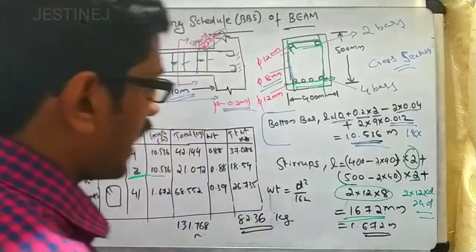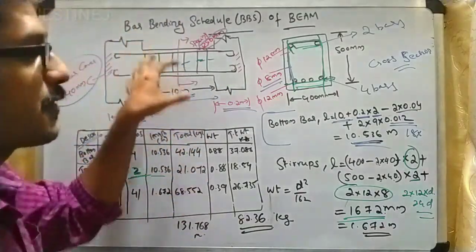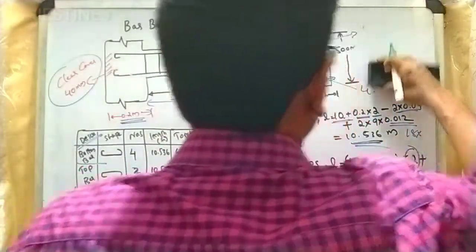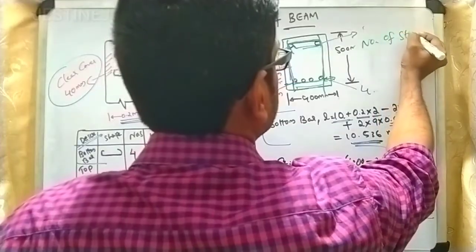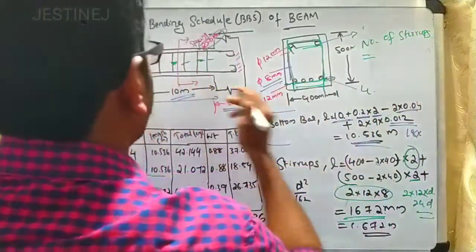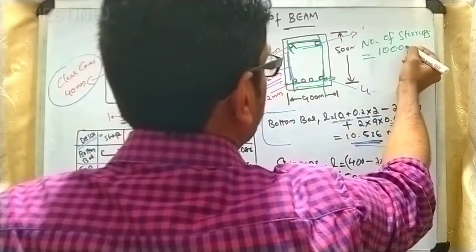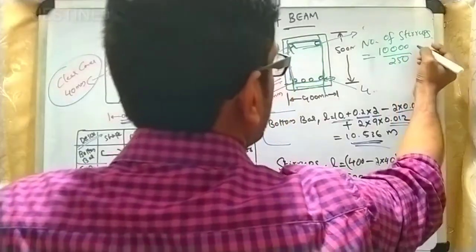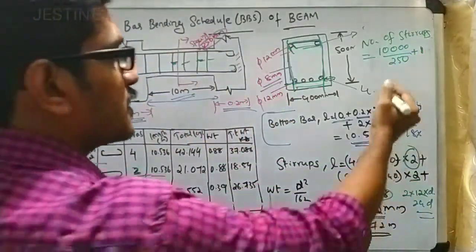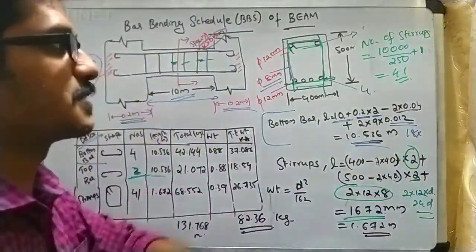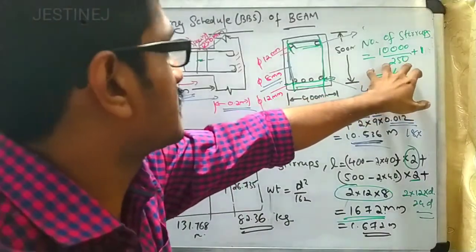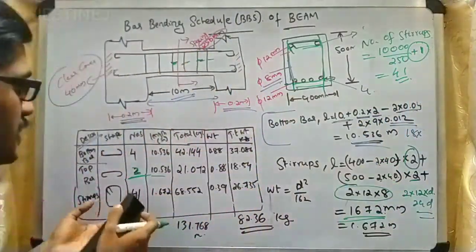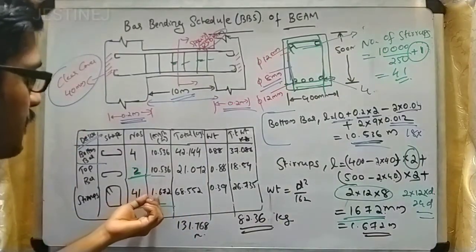The next step is to calculate the number of stirrups. The formula is: number of stirrups = total span length divided by spacing, plus 1. Using 10,000 mm divided by 250 mm spacing plus 1, you get 41 stirrups. This plus 1 in the formula is very important.